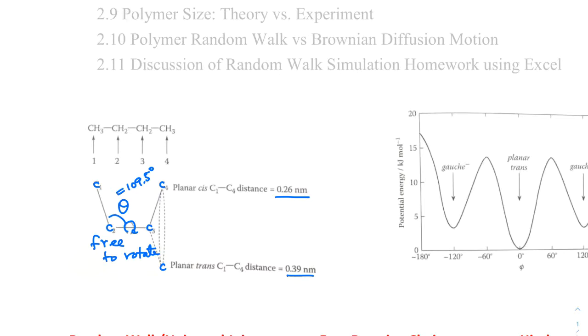Okay. So they can, they can just rotate, and they can equally take, there's no preferences for them to take any positions, whether it is a trans, or it is an eclipse, or it is a staggered, and you remember the nomenclature that you learned before.